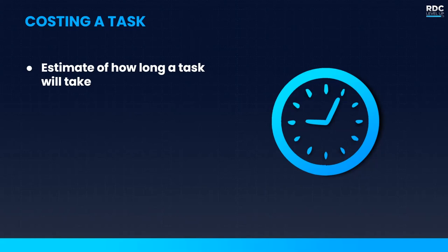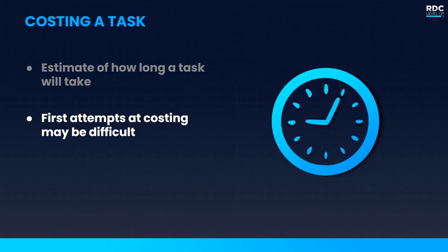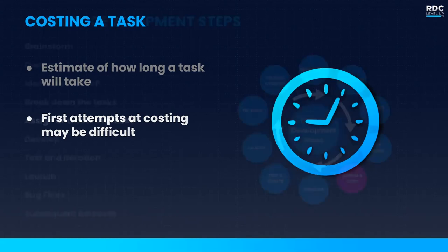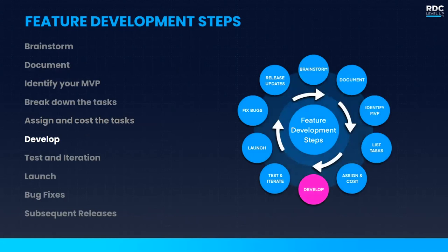The other important thing about costing is that you should be baking in iteration and testing time. This isn't an estimate of how quickly it takes to implement your first attempt — it's how long to get the task done. The first attempts at costing may be difficult, but that is okay as long as you're getting into the practice of improving your estimation. Our goal at the end of the day is to avoid crunch at all costs, because crunch leads to less polished experiences and stupid mistakes.